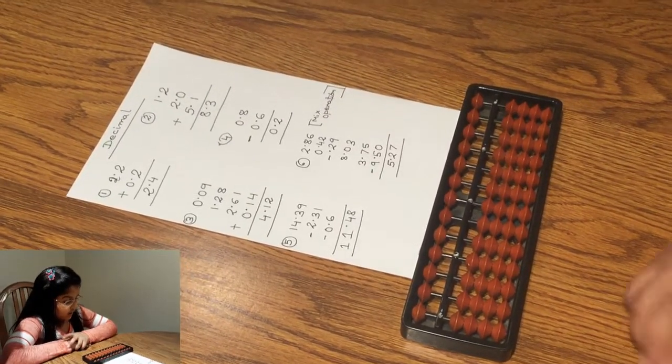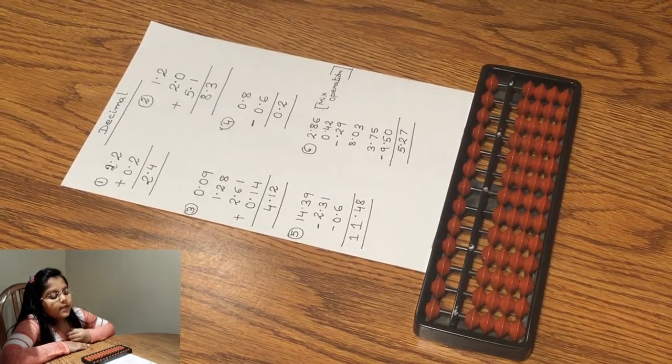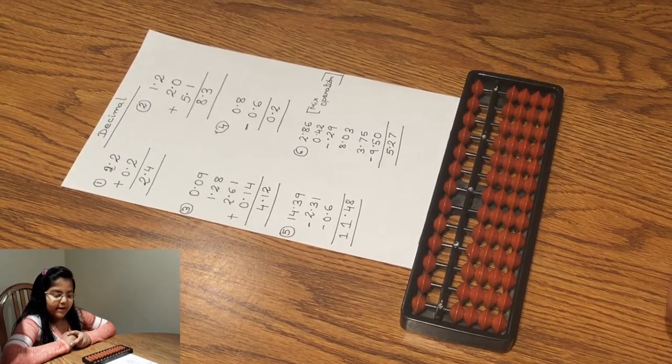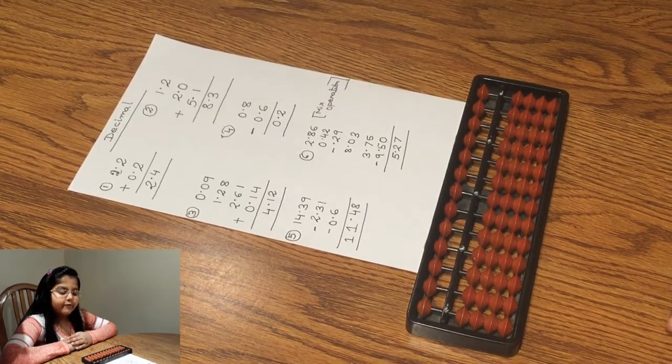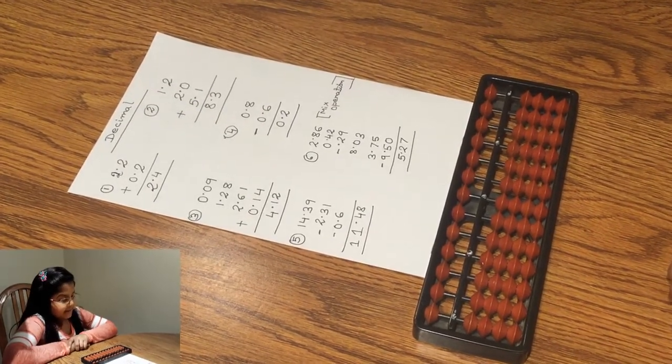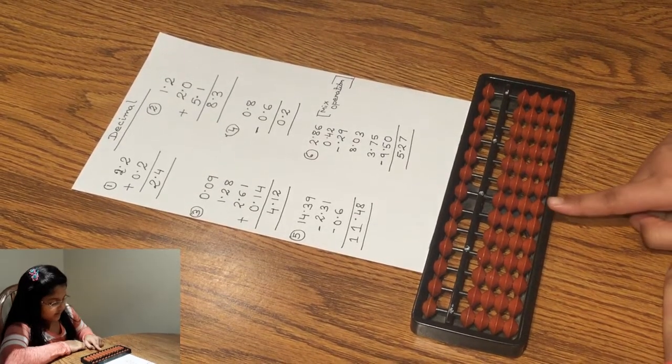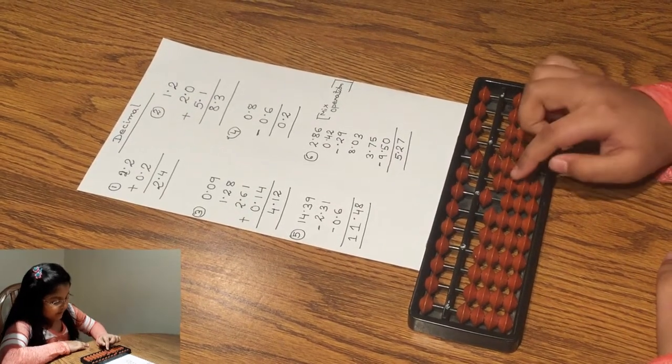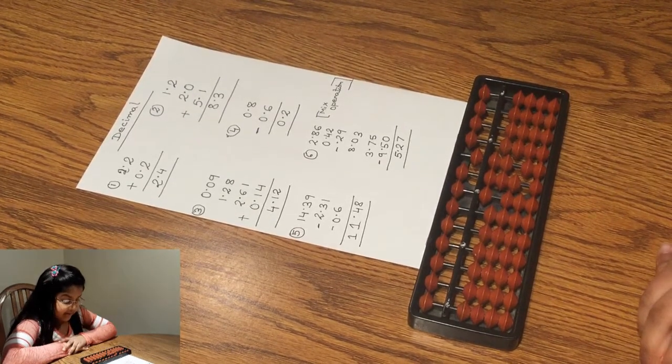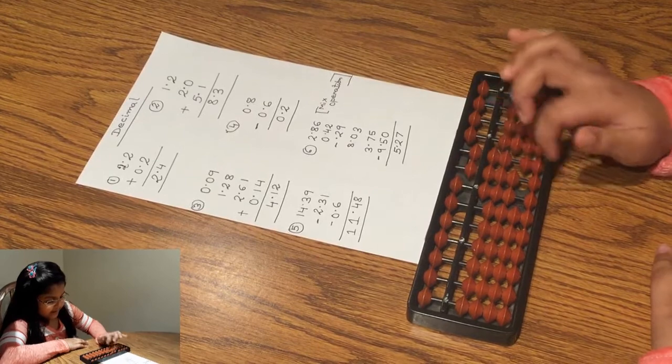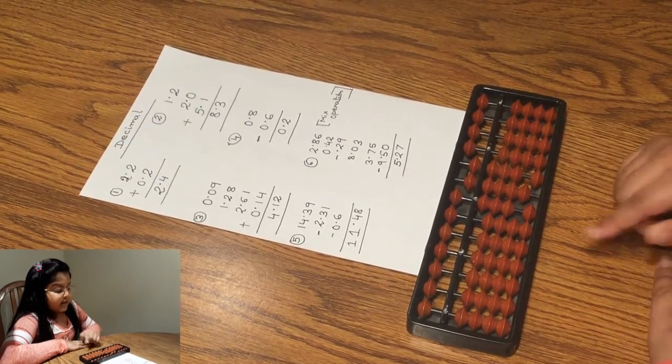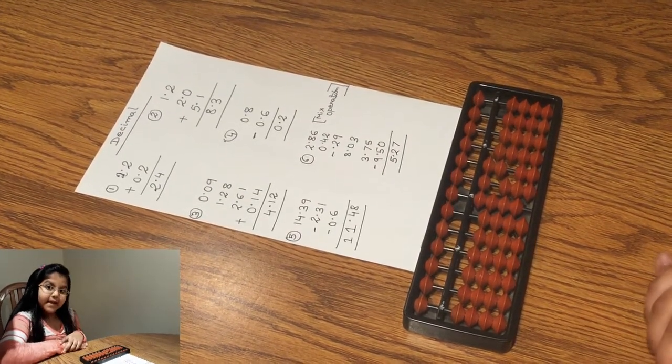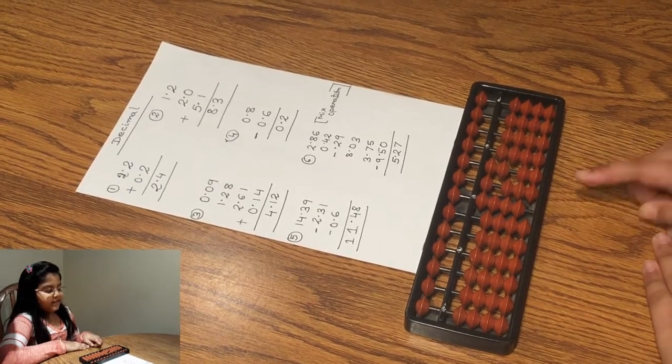Let's try another one. Let's do 0.09 plus 1.28 plus 2.61 and plus 0.14. First, we'll place 0.09 on our abacus, then 0.09 plus 1.28 plus 2.61 plus 0.14, which gives us the answer of 4.12.